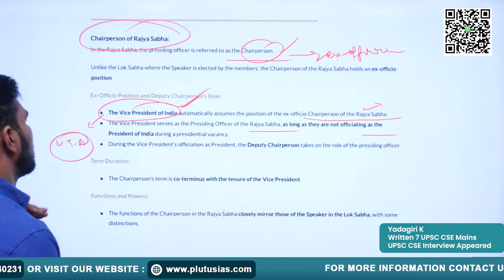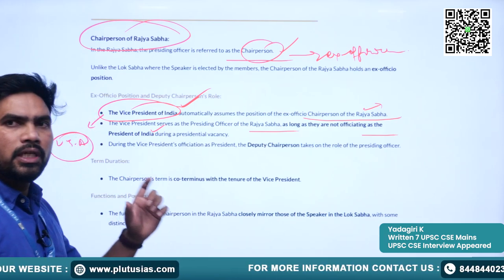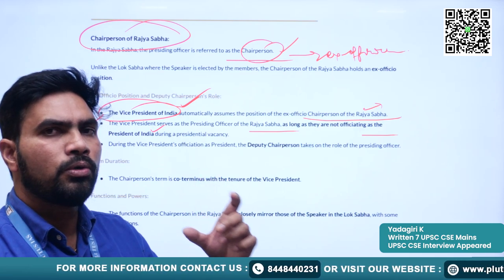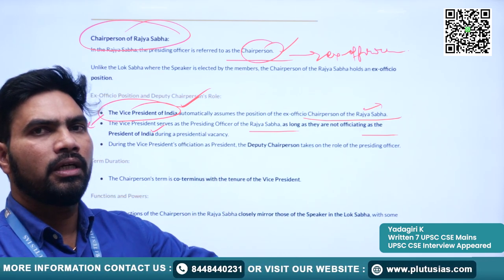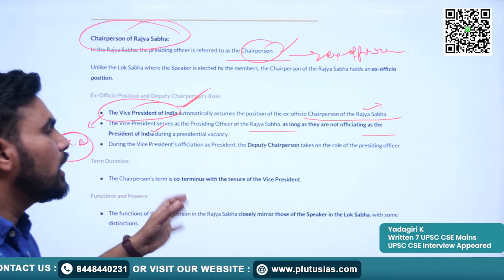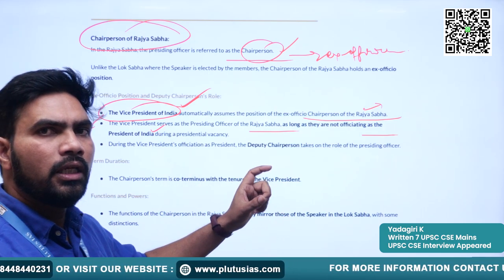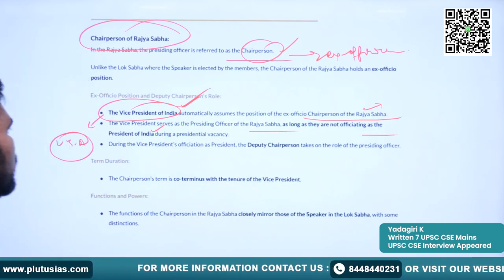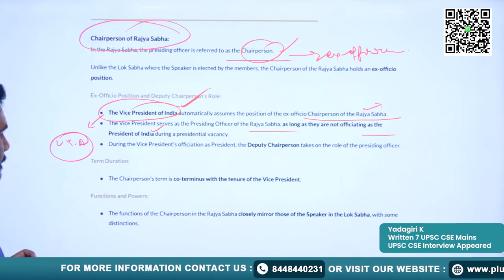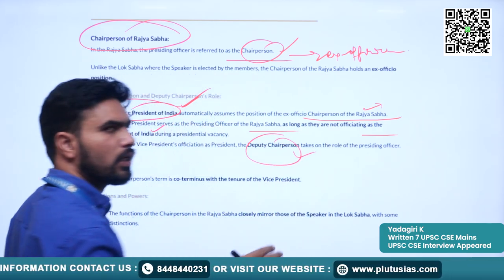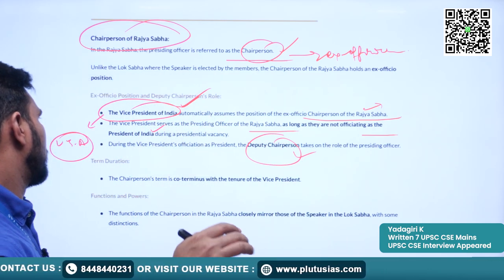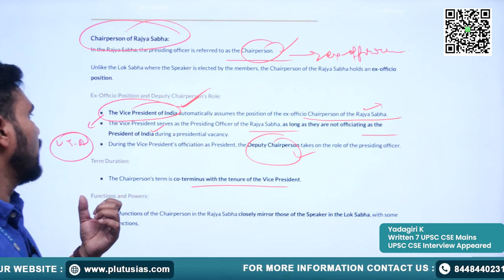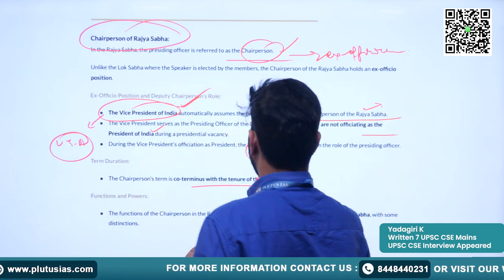The Vice President acts as chairperson of Rajya Sabha as long as he is not officiating as the President of India. When a vacancy arises to the position of President, the Vice President starts acting as the President of India — in that case, the deputy chairperson will take over the proceedings of the house. The chairperson's tenure is co-terminus with the tenure of the Vice President.